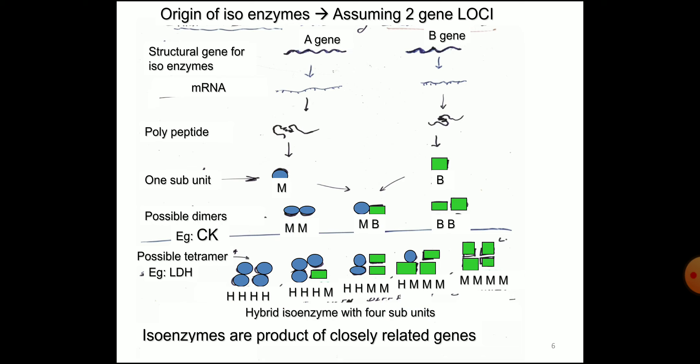In this picture, you can see a product of different genes producing different polypeptides. When these polypeptides assemble in various forms, they produce different types of isoenzymes. There are two possible genes: A gene and B gene. A gene produces one mRNA, B gene produces another mRNA coding for polypeptides. A gene subunits are M, B gene subunits are B, and these can combine in various combinations like MM, MB, and BB. Creatine kinase is an example of this type.